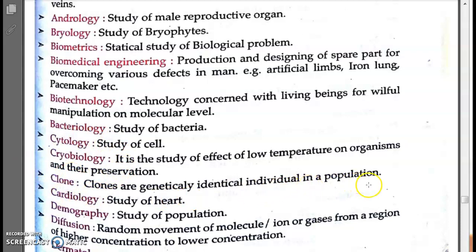Clones are genetically identical individuals in a population. Genetically identical means having the same genes. Cloning means making an exact copy of a plant or animal — producing identical individuals in a population.